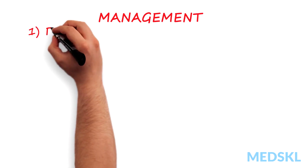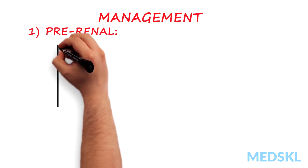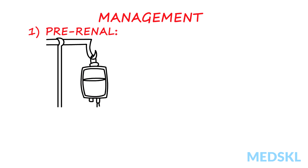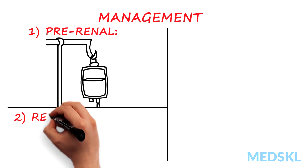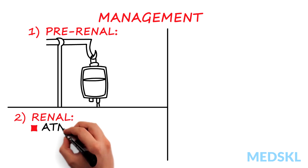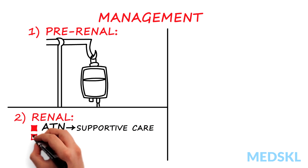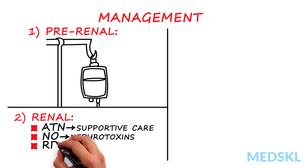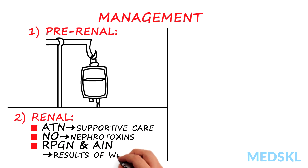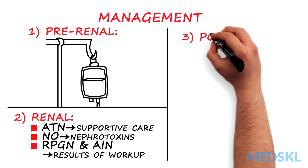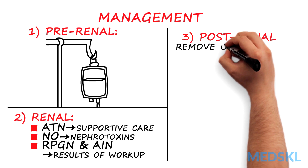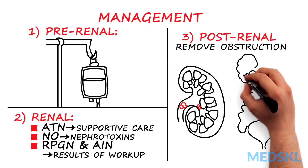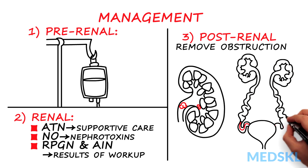Management: 1. Pre-renal — restoration of effective circulating volume will restore GFR to baseline. 2. Renal — treatment for ATN is supportive; avoid nephrotoxins. Treatment of RPGN and AIN depends on the results of the workup. 3. Post-renal — removing the obstruction will improve GFR. The amount of improvement depends on the duration and severity of the obstruction.